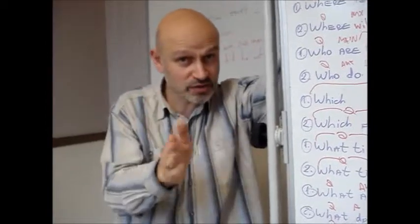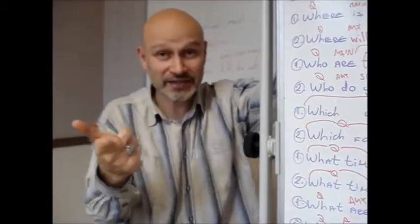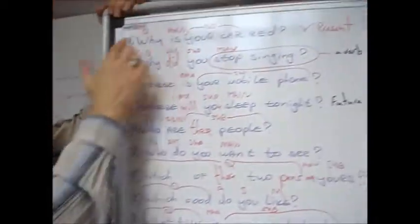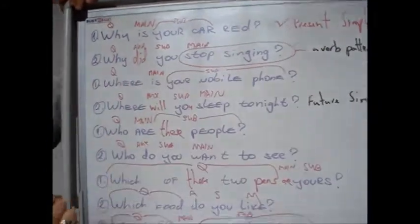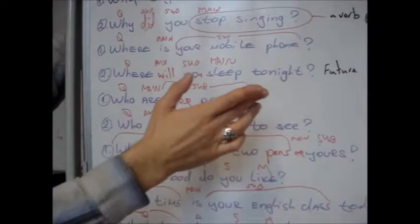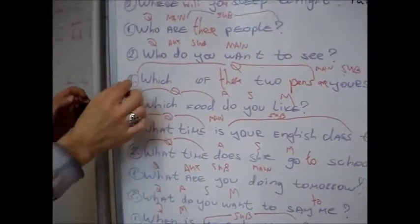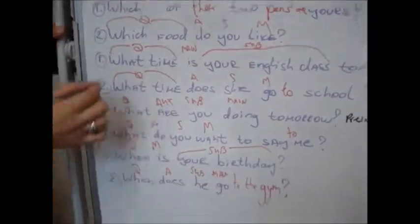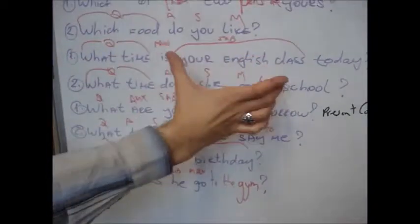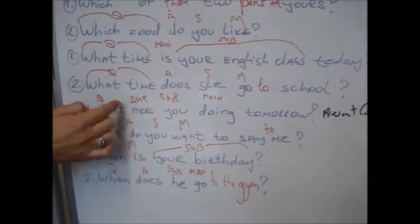But in the present simple, when you use the verb to be, it's the main verb. Look back here. 'Why is your car red?' 'Where is your mobile phone?' 'Who are these people?' 'Which of these pens are yours?' 'What time is your English class?' 'What are you doing tomorrow?' That's present continuous.